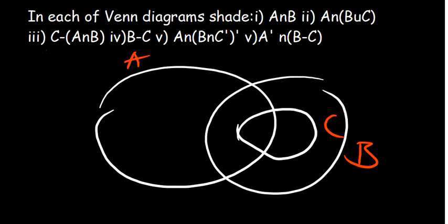Welcome back. In this video we're going to go over a question that involves shading, but this time with a different setup for our Venn diagram. In this case, C is a subset of B, which is a subset of A. So now we are going to shade the given sets.